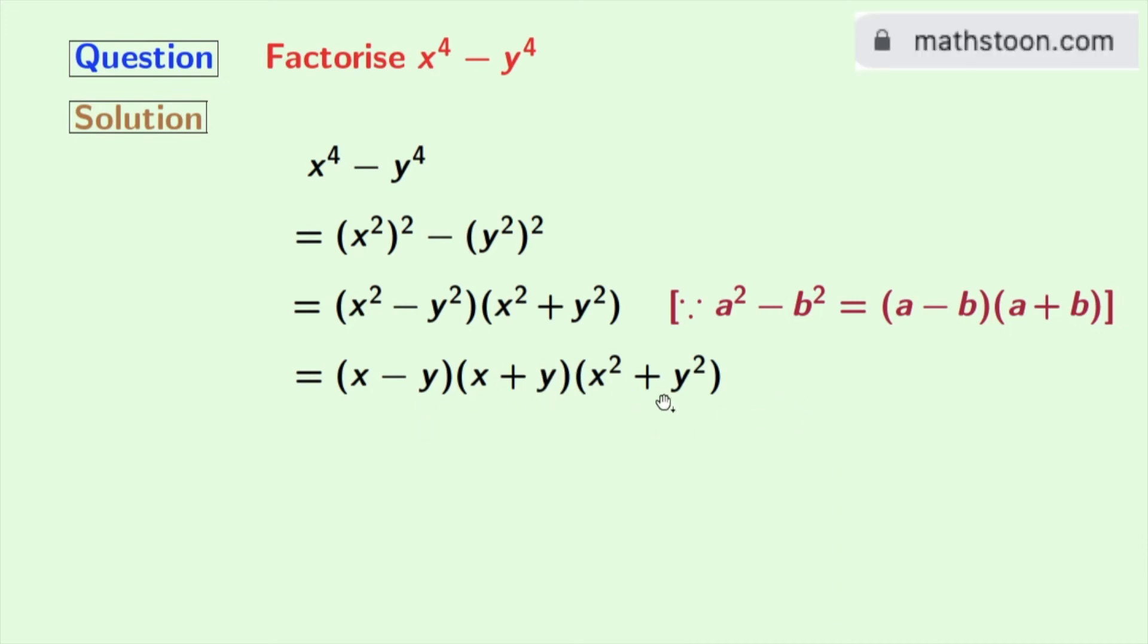So our desired factorization of x power 4 minus y power 4 is x minus y times x plus y times x squared plus y squared. Thank you for watching, please like and share this video if you find it useful.